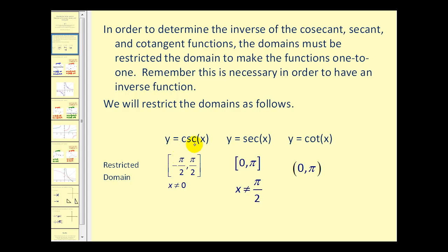For y equals cosecant x, we will restrict it on the closed interval from negative pi over two to pi over two, and of course x can't equal zero because it's undefined there. Y equals secant x on the closed interval from zero to pi, x not equal to pi over two. And for y equals cotangent x, the domain will be on the open interval from zero to pi.